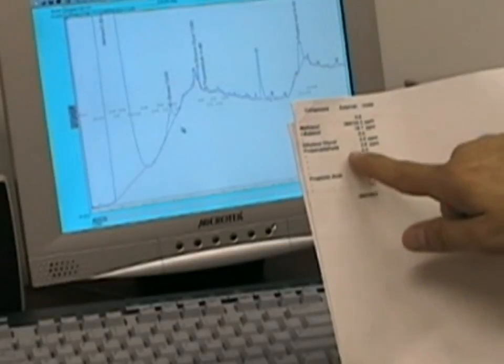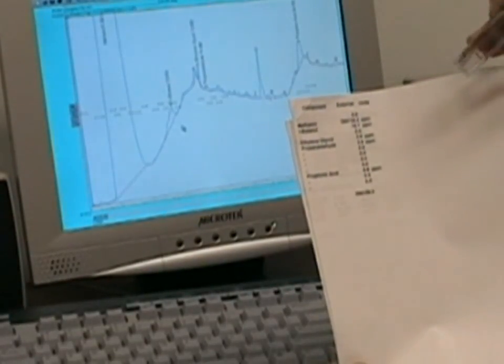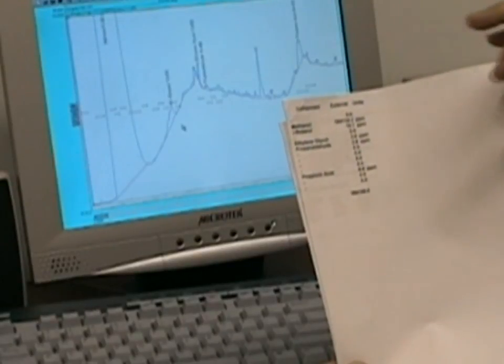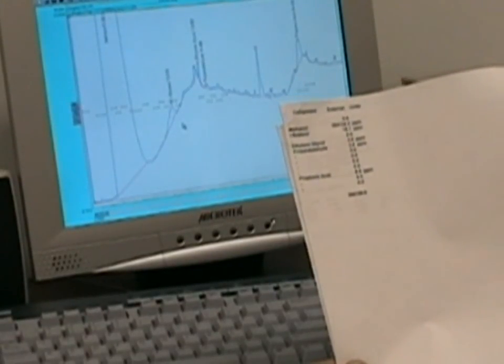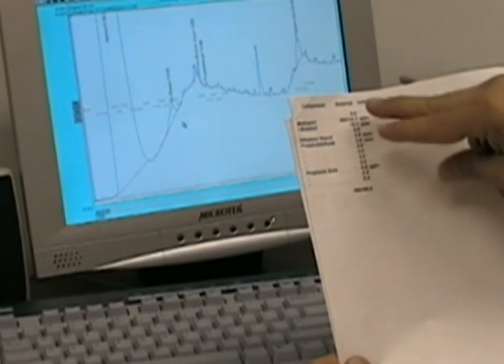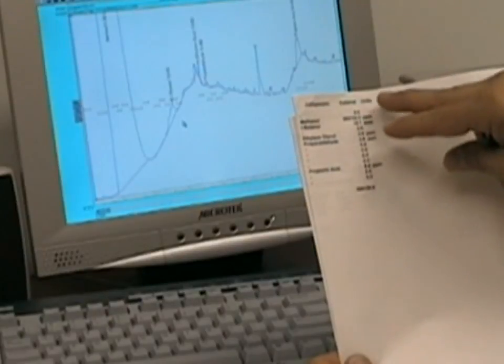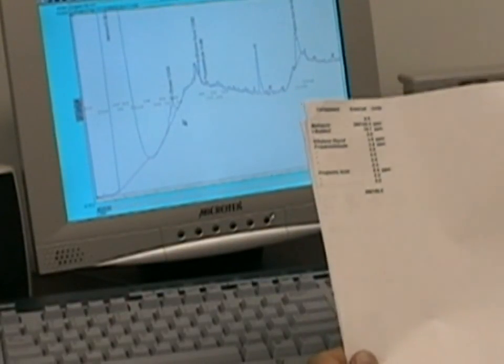For example, we have ethylene glycol, 3.6 ppm in the diluted sample, that would be 36 ppm in the original vodka, as an example. By comparing the components that are found in the concentration, you can compare the quality of the different beverages.